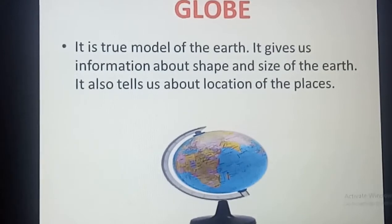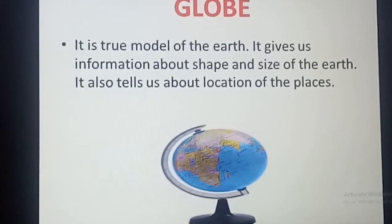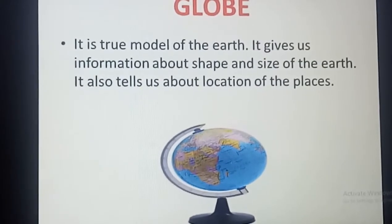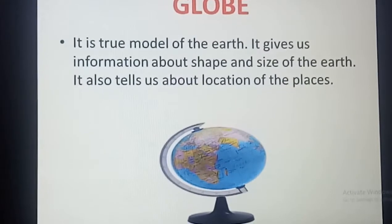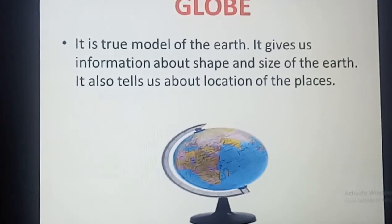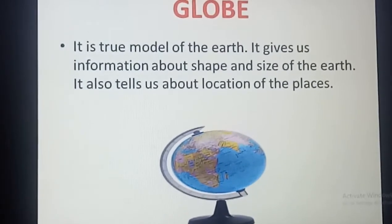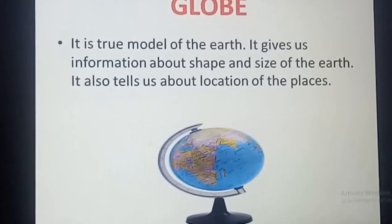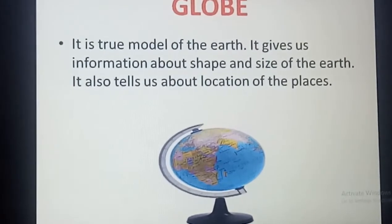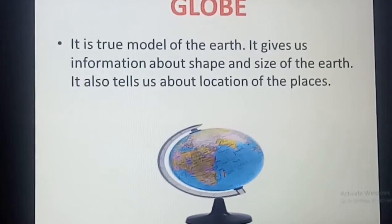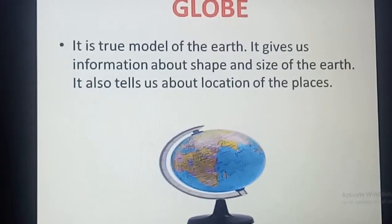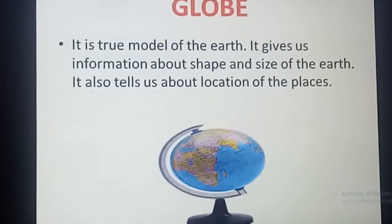This structure you might have seen in your homes or in your previous classes — this is the globe. Our earth is not stationary; it is revolving around the sun. In the same way, our globe also rotates. We can rotate it and see the places in all directions.